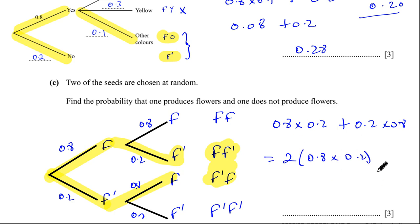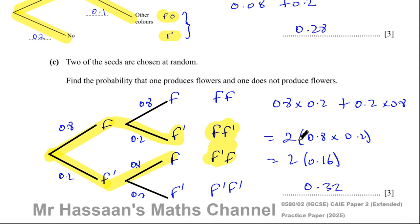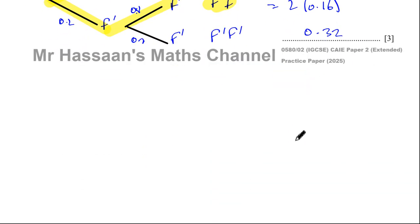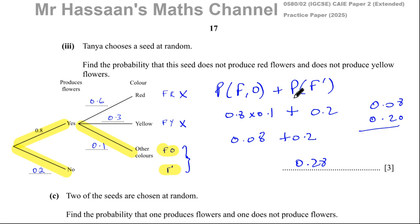Because both outcomes are the same, this gives you 2 times (0.8 times 0.2). That's 8 times 2 = 16, two spaces back gives 0.16, then 2 times 0.16 is 0.32 — like 2 times 16 is 32, two spaces back again. So 0.32 is the answer to part C. That concludes question number 24 from the practice paper for the Cambridge IGCSE new syllabus paper 2.